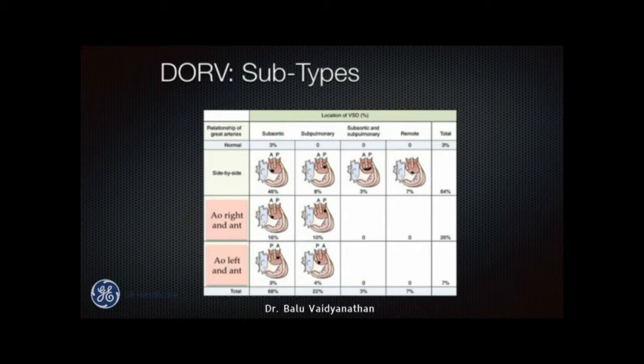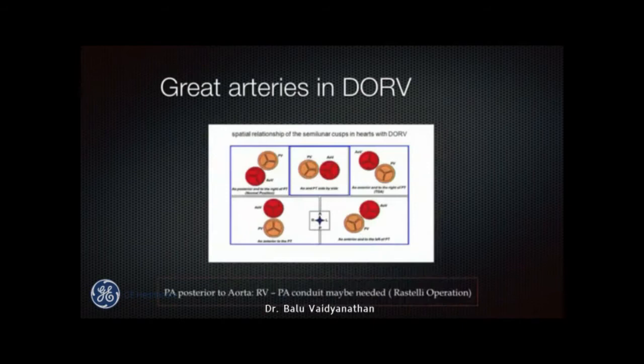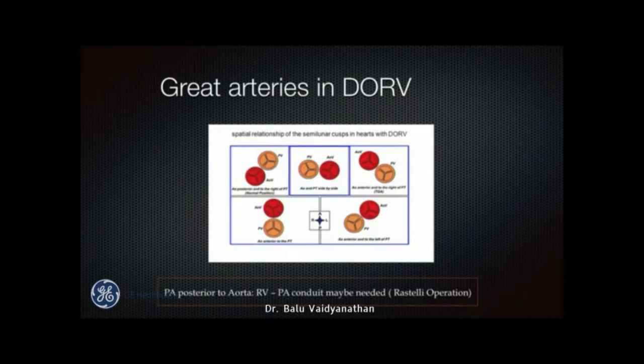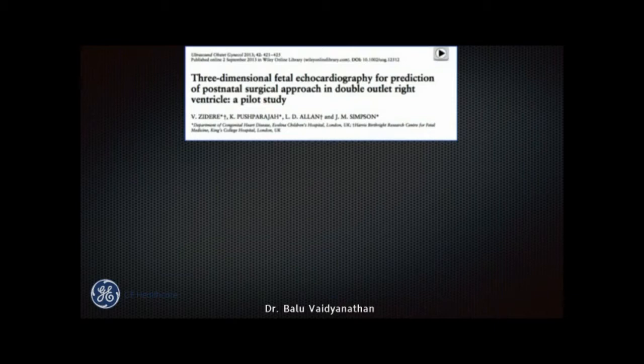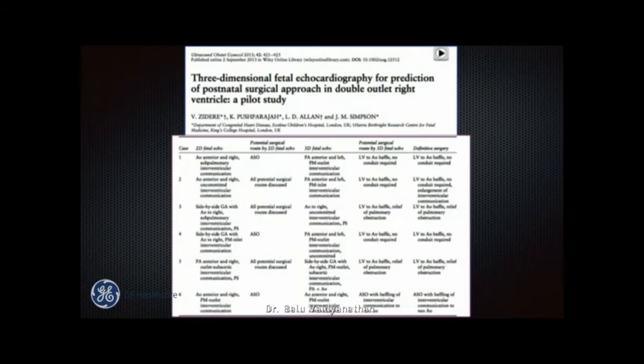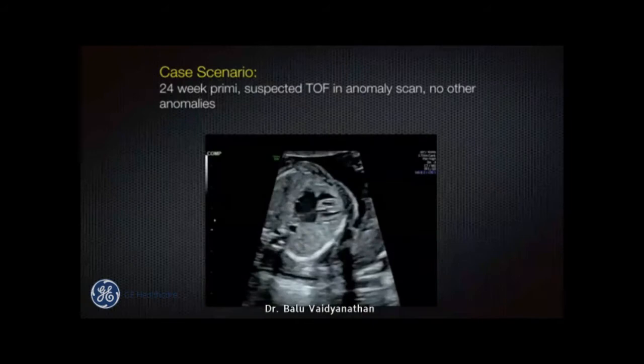There are 16 different types of DORV based on great artery relationship and VSD location. The most common type — 46% — is sub-aortic VSD with side-by-side great arteries. Great artery relationships in DORV include side-by-side, anterior aorta (right or left), and directly antero-posterior. A study from the UK by Dr. John Simpson at Evelina Children's Hospital examined the incremental role of 3D fetal echocardiography for predicting the postnatal surgical approach in DORV. In six patients, they accurately predicted what surgery would be performed using 3D fetal echocardiography. This was published in Ultrasound in Obstetrics and Gynecology in 2013.